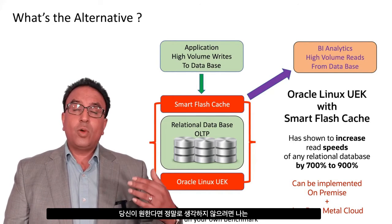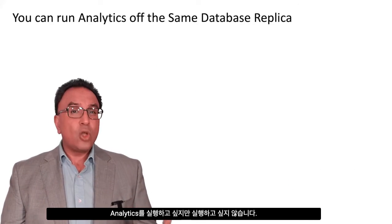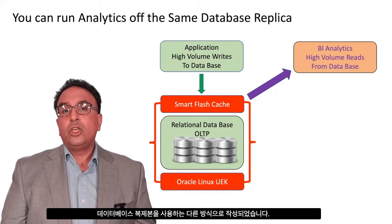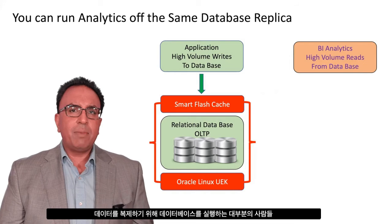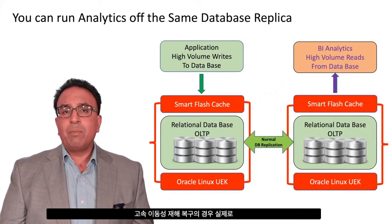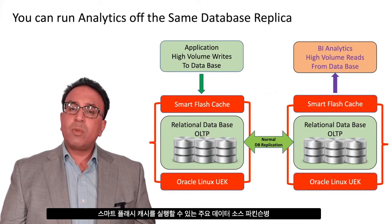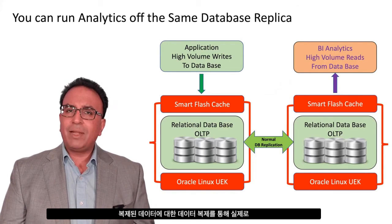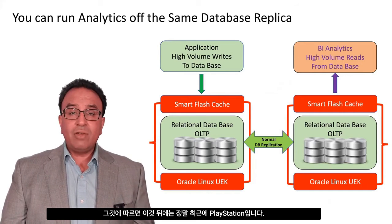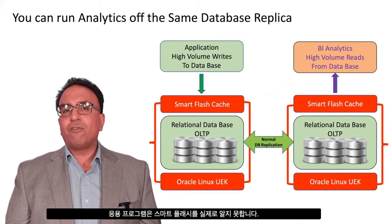So if you wanted to run analytics but still don't want to run it off the same dataset that's being written to, you can implement it in another way. Use a database replica. Most people who are running databases do replicate their data for high availability and disaster recovery. So in this example, instead of targeting the main data source, you can run Smart Flash Cache over the replicated data and have BI analytics plug into that. It's a really simple implementation, and the application doesn't know that Smart Flash Cache has been implemented.